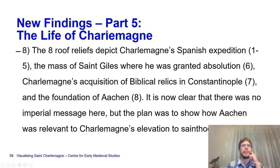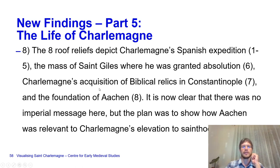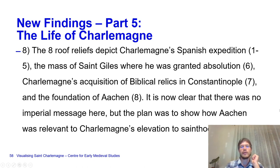The eight roof reliefs depict: Charlemagne's Spanish expedition, scenes one to five; the Mass of Saint Giles where he was granted absolution, number six; his acquisition of biblical relics in Constantinople, number seven; and the foundation of Aachen, number eight. There is no imperial message here—the plan was to show how Aachen was relevant to Charlemagne's elevation to sainthood.